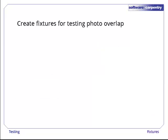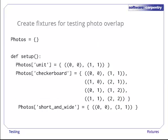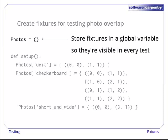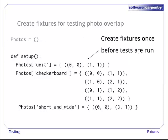Alright, let's write a setup function to create some fixtures for testing photo overlap. Here's the code. We start by creating a global variable called photos to hold our fixtures. We use a global variable outside any particular function so that both setup and our individual tests can see it. Inside setup we create sets of rectangles and store them in photos.